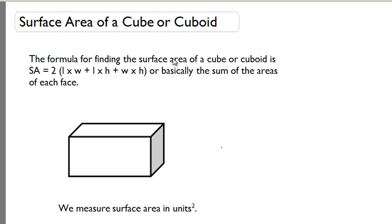In order to find the surface area of a cube or cuboid, we're going to use a very different process than we use for volume. First off, volume is how much space an object or solid takes up. Surface area is very different. Surface area is just how much area is on each of the surfaces of the cube or cuboid.